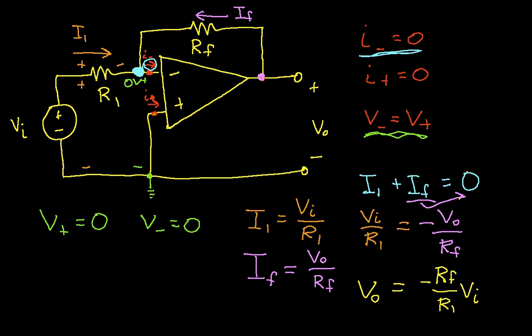This term negative RF over R1, this is called the gain of the circuit. And the idea is it tells us how much V in is increased to get V out. And in this case, the fact that the gain is negative means that V out will have an opposite sign to V in and it'll be multiplied by RF over R1. So this is how you do the analysis.